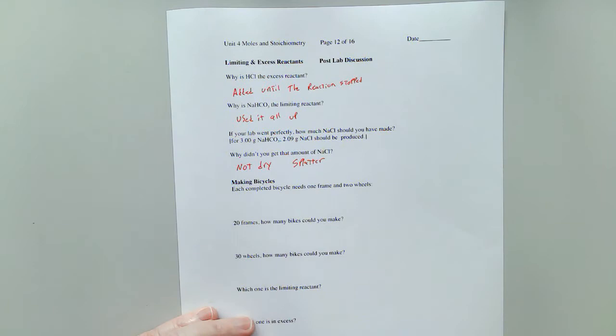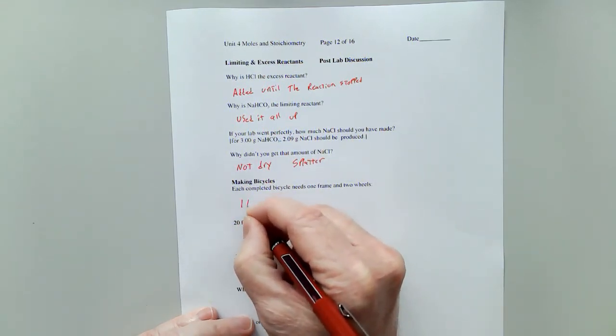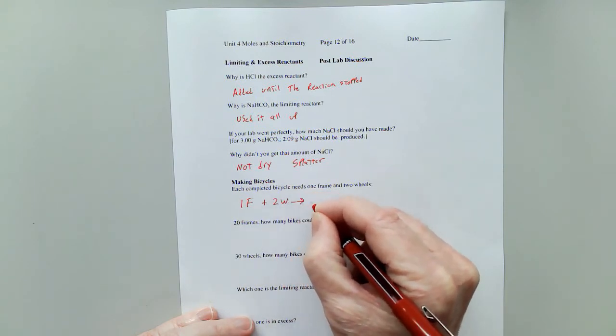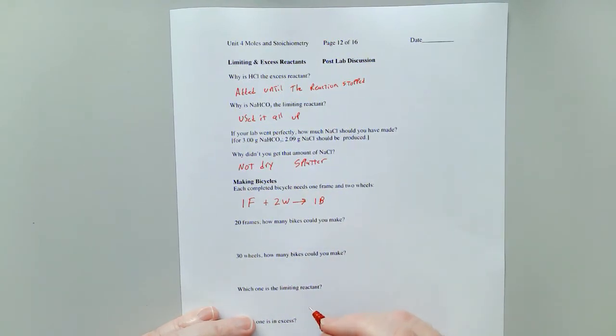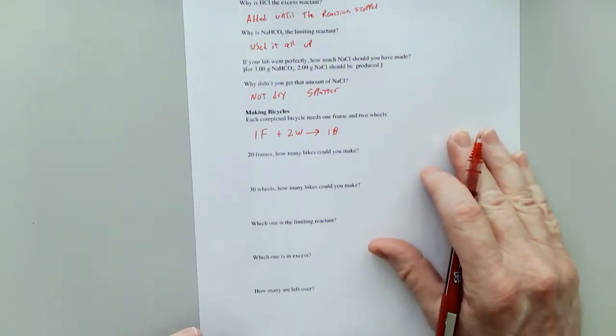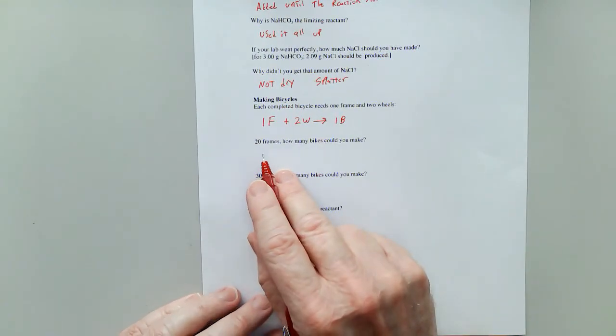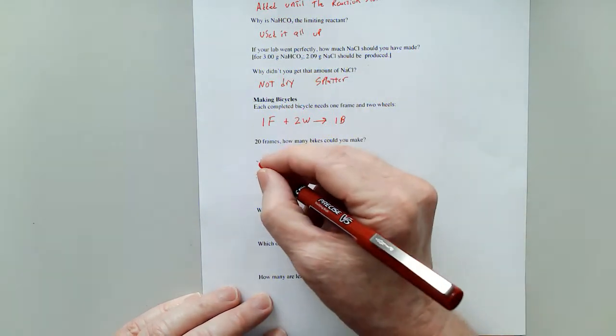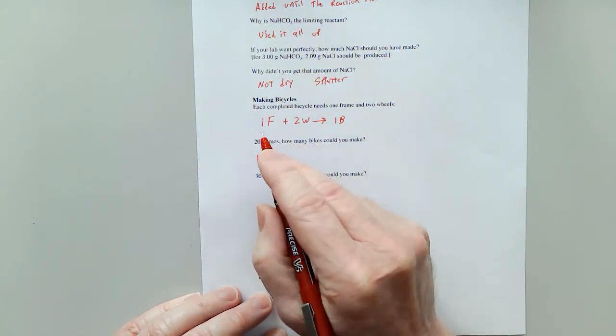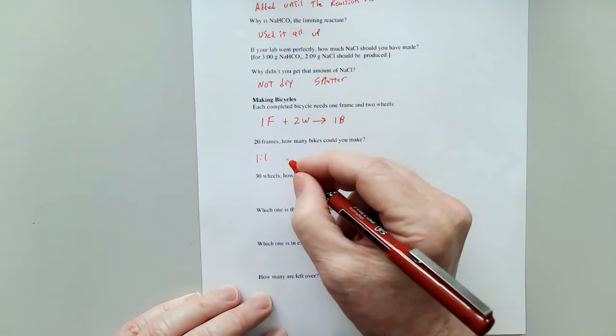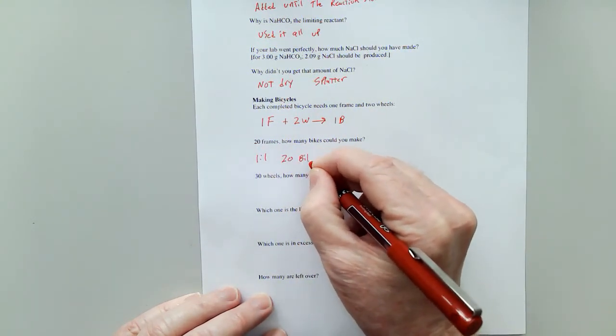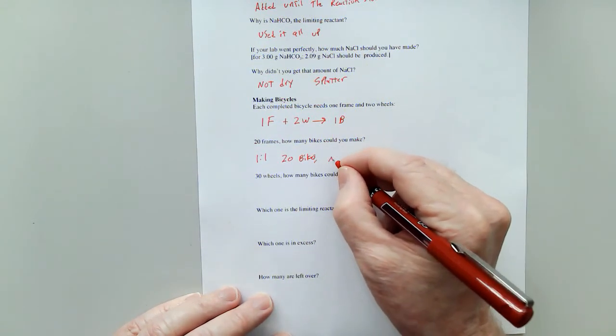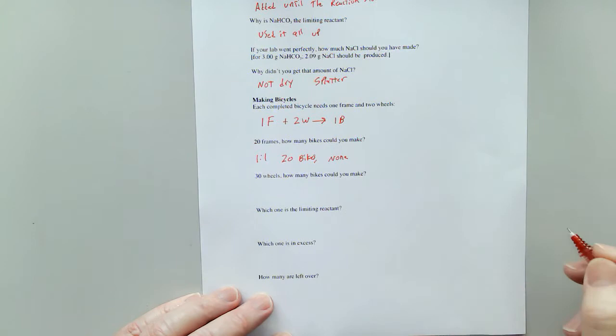So I can write a balanced chemical equation, believe it or not. One frame plus two wheels yields one bicycle. Now, if I have 20 frames, how many bikes could I make? Well, I'm going to give you two answers to that. It's a one-to-one ratio. One frame for one bike. So in a sense, 20 bikes is one possible answer. The other possible answer is none, because you don't have any wheels.